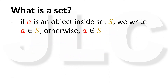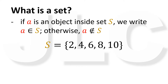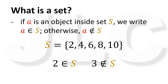If A is an object inside S, then we write A is an element of S. Otherwise, if A is not an object inside S, then we write A is not an element of S. For example, if S is a set with elements 2, 4, 6, 8, 10, then 2 is an element of S, but 3 is not an element of S.